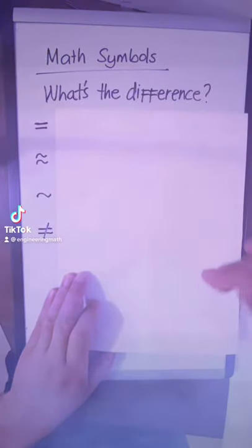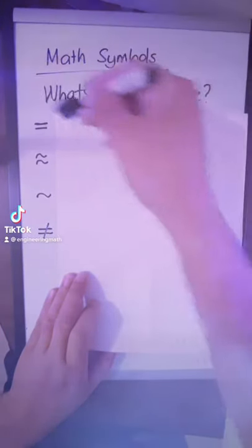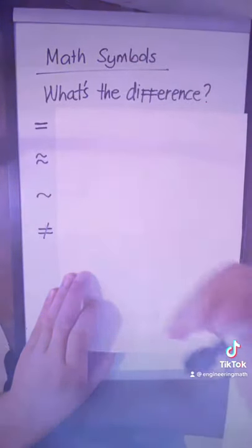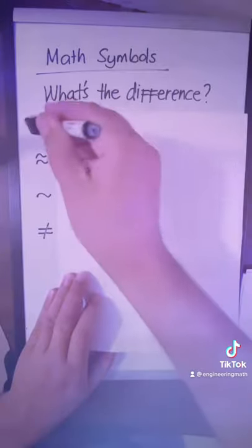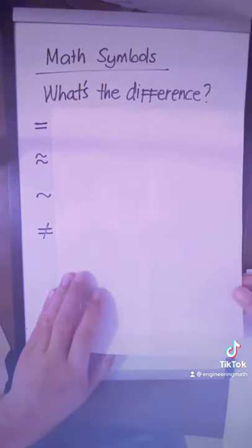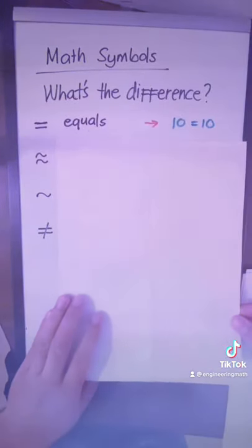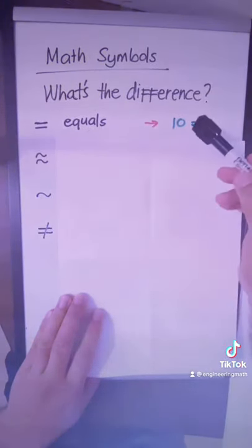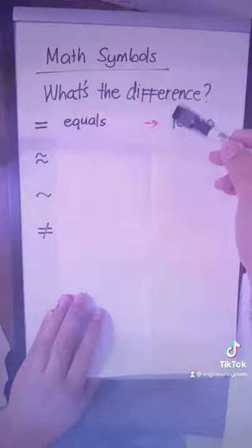Do you know the difference between these math symbols? Well, the first one is obvious — it means equals. For example, 10 is equal to 10.